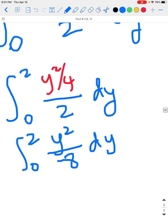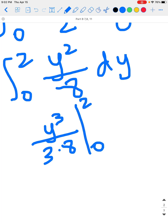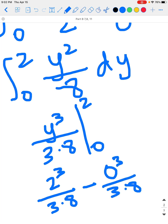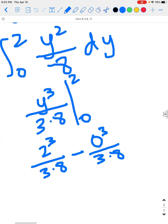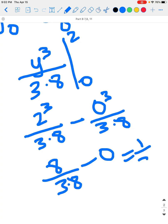We integrate that. The antiderivative of y squared is y cubed over 3, so you have y cubed over 3 times 8, evaluating from 0 to 2. If you plug in 2, you get 2 cubed over 3 times 8 minus 0 cubed over 3 times 8. 2 cubed is 8, so those 8s divide out. You have 8 over 3 times 8 minus 0, which equals 1 third.